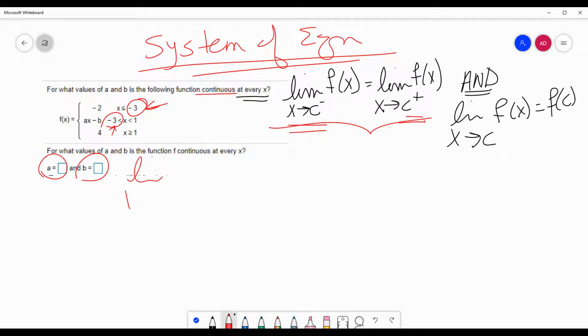So the first one I'm going to look at, as I approach negative 3 from the left-hand side, that's going to have to equal the limit as x approaches negative 3 from the right-hand side.